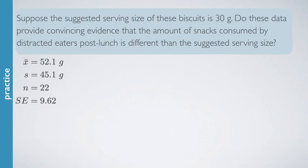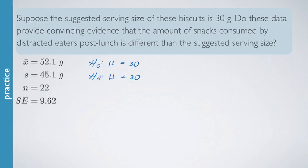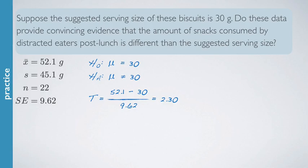Now suppose the suggested serving size of these biscuits is 30 grams. Do these data provide convincing evidence that distracted eaters consume an amount different from the suggested serving size? We set up a hypothesis test. The test statistic is a t-score: observed value 52.1 minus the null value of 30, divided by the standard error 9.62, giving a t-statistic of 2.30. This is the same idea as before — observed minus null divided by standard error. What's new is that the t-statistic comes with degrees of freedom.